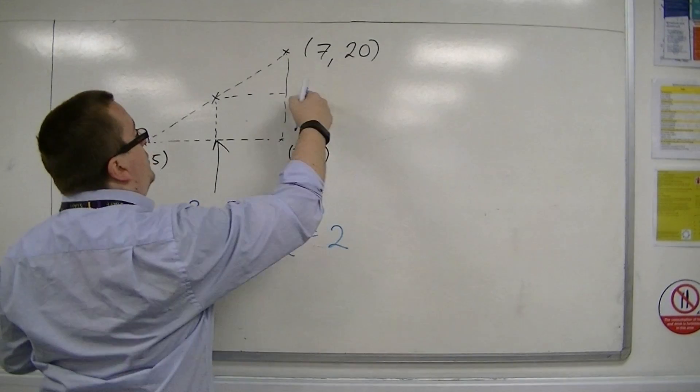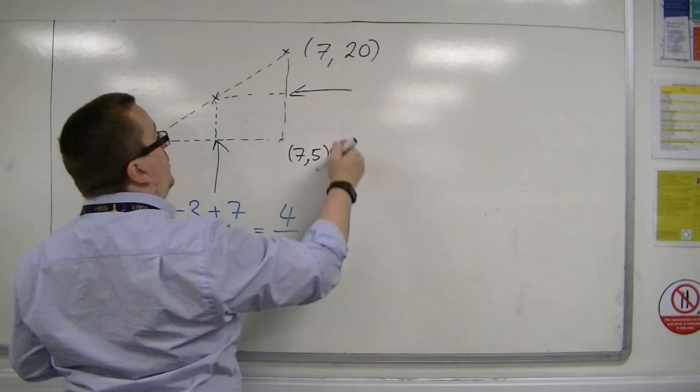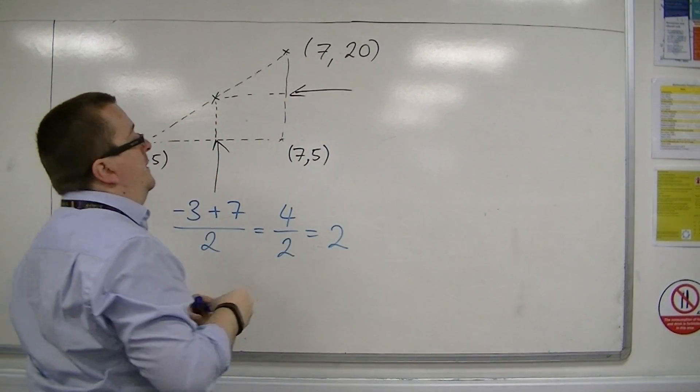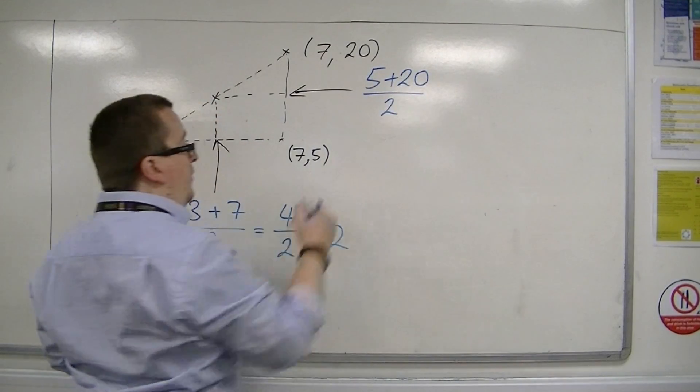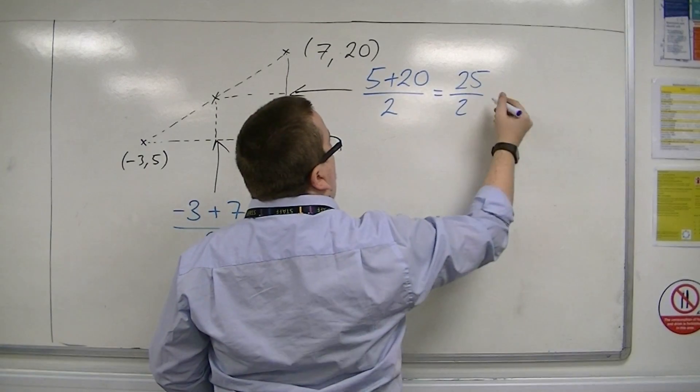And then I can do the same, trying to find the midpoint between the two y-coordinates, which is 5 and 20. So 5 plus 20, then divide by 2, so I get 25 over 2, which is the same as 12.5.